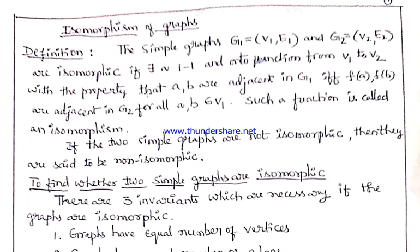Now coming to the concept, let us see first how the isomorphism of graphs is defined. The simple graphs G1 = (V1, E1), where V1 is the vertex set of G1 and E1 is the edge set of G1, and the second graph G2 = (V2, E2), where V2 is the vertex set of G2 and E2 is the edge set of G2. We say that these are isomorphic if there exists a one-to-one and onto function between the two vertex sets V1 and V2, such that the vertices A, B of graph G1 are adjacent if and only if the vertices f(A) and f(B) in graph G2 are adjacent.